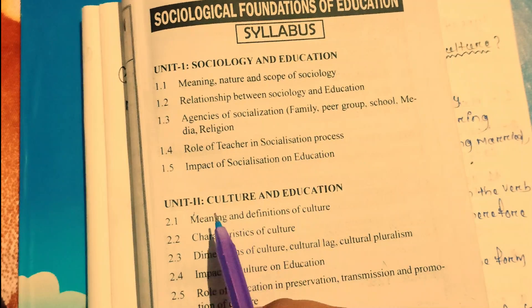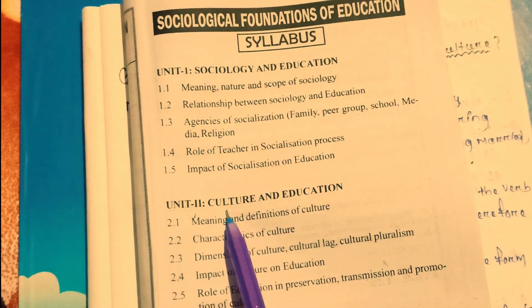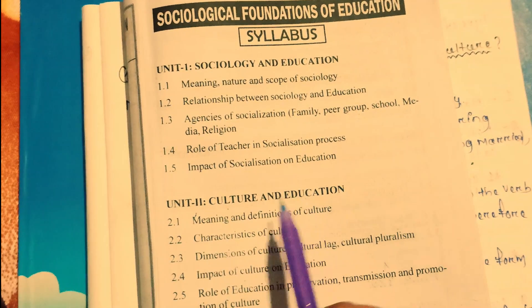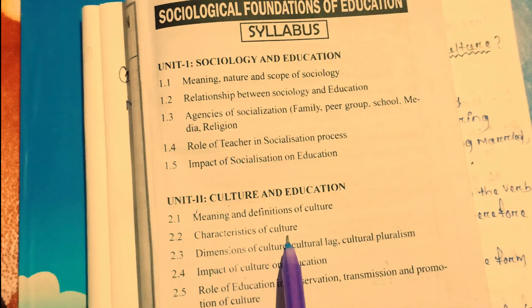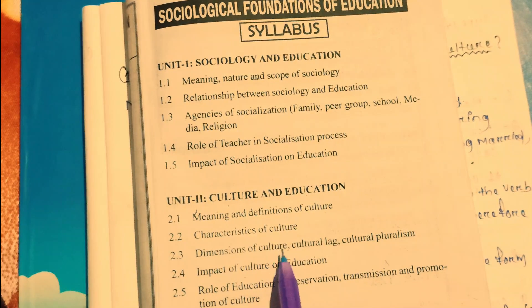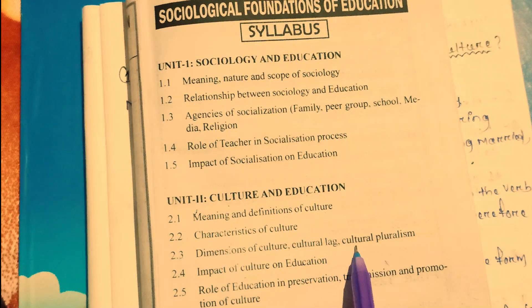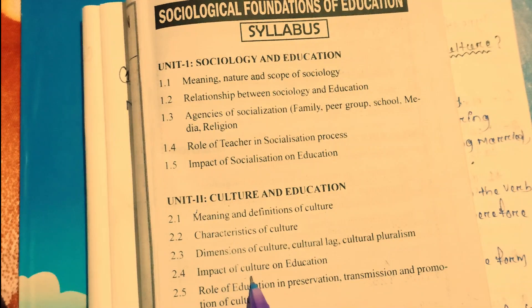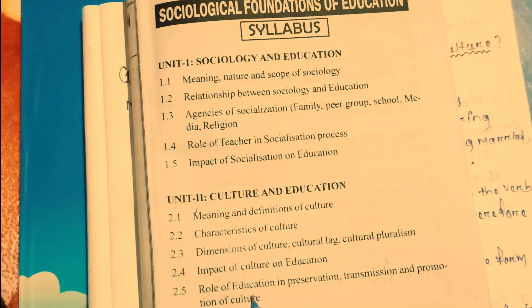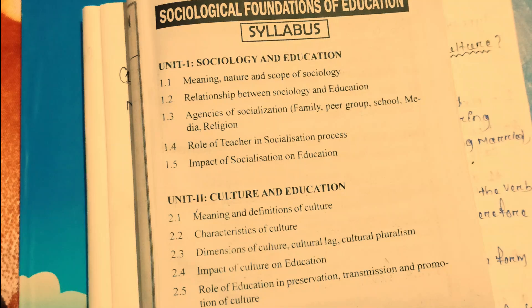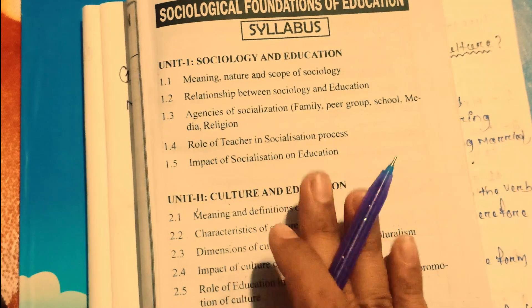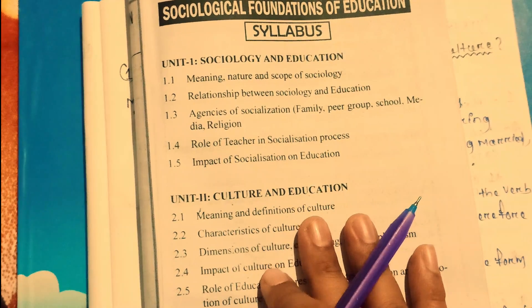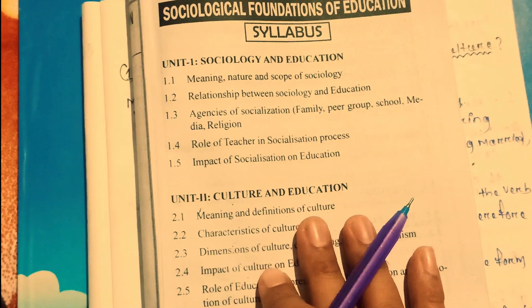The unit name is Culture and Education. The contents include: meaning and definition of culture, characteristics of culture, dimensions of culture, cultural lag, cultural pluralism, impact of culture and education, and the role of education in preservation, transmission and promotion of culture.